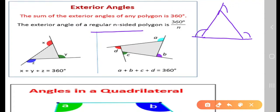You are taking the exterior angle of a triangle like this. Then if you want to find the angles, it will be 360 by n, means three sides are there. Then it will be 120.